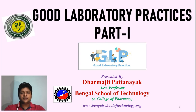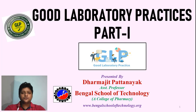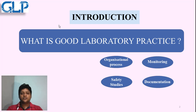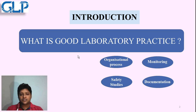Good Laboratory Practice is mainly useful for laboratories that perform non-clinical studies for research work. This is mainly useful for the quality assurance of the non-clinical study for research work. GLP is mainly based on these four parameters: the first one is organizational process — how an organization is working, what methods and regulatory requirements they have to follow.